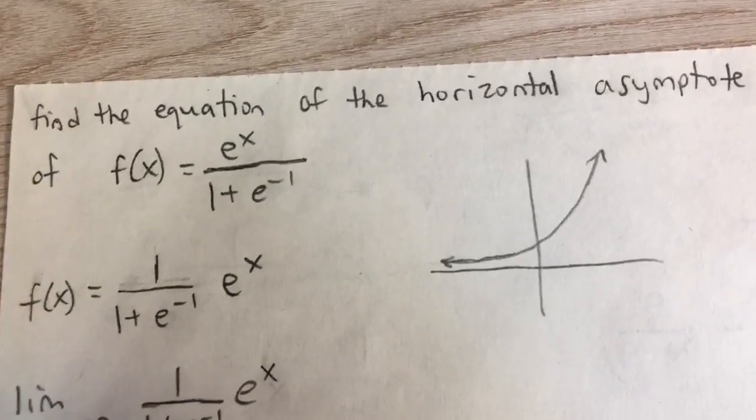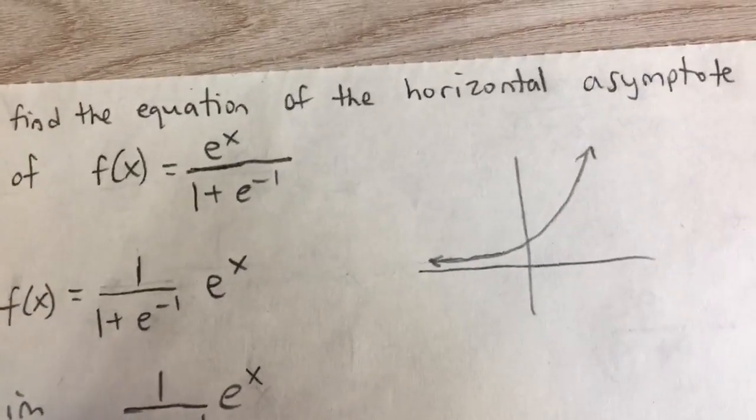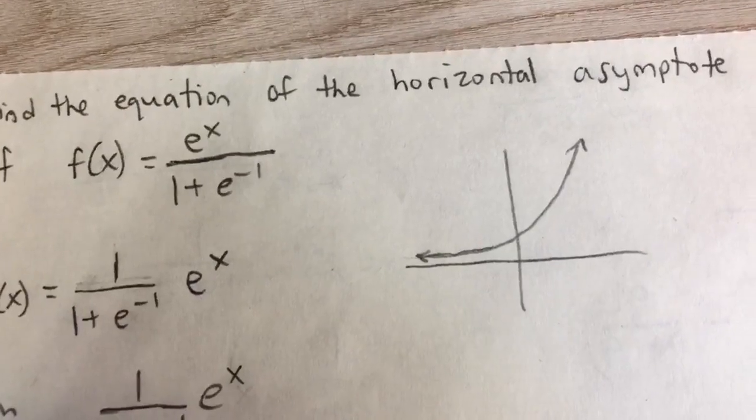Find the equation of the horizontal asymptote of f of x equals e to the x divided by 1 plus e to the negative 1.